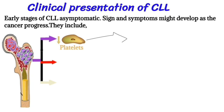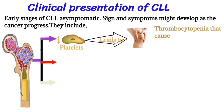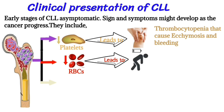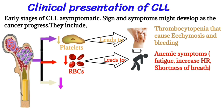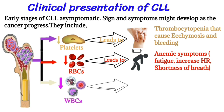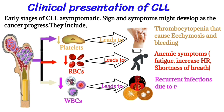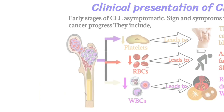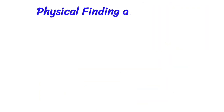If there is decreased production of platelets, it may lead to thrombocytopenia, causing ecchymosis and bleeding. If there is decreased production of red blood cells, it may lead to anemia, with symptoms like fatigue, increased heart rate, and shortness of breath. If there is decreased production of white blood cells, it may lead to recurrent infection due to non-functional white blood cells.